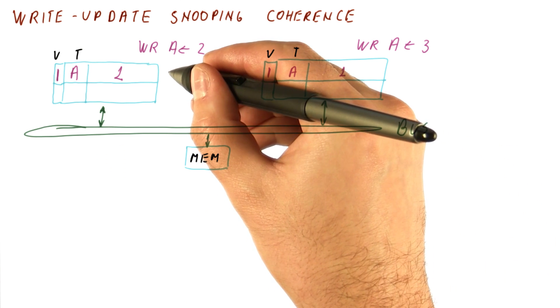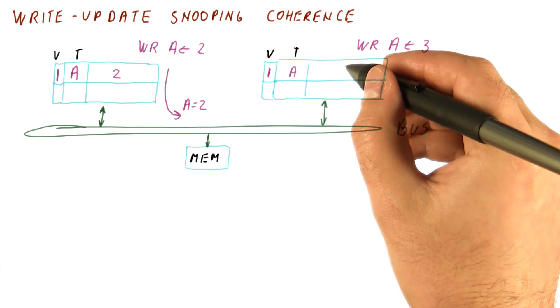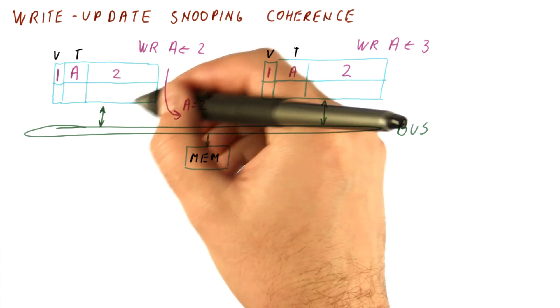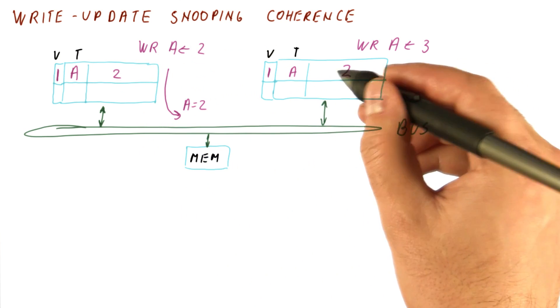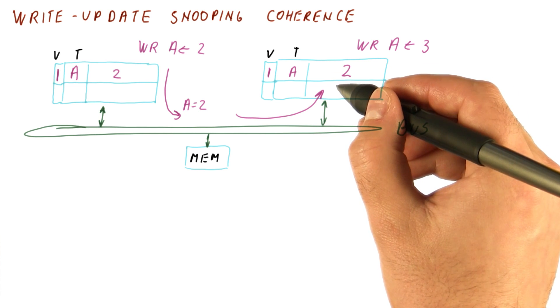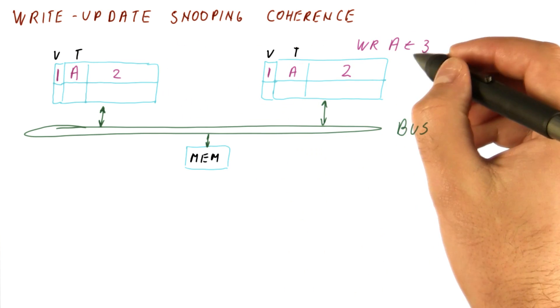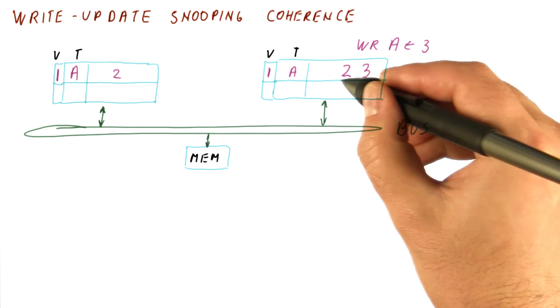If this core won, then it sends its write first. Now both of the caches will have two. This one because this is where the write happened, this one because this is what we pick up from snooping. And only then, after this is complete, this write here gets to occur. So now we go to three.